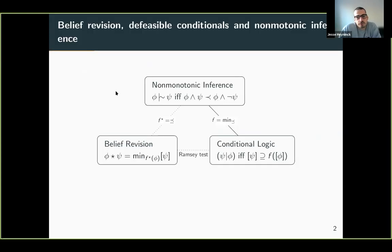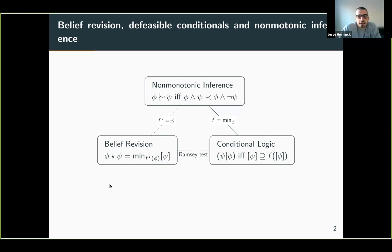The research question we answered in this paper started from the observation that in propositional logic there is a nice triangle of related concepts. There are well-established ways to go from non-monotonic inference to belief revision and back, from conditional logic to non-monotonic inference and back, and from belief revision to conditional logic and back.